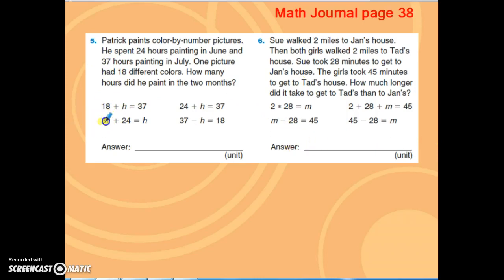The 37 plus 24 equals h. I'm going to go ahead and solve that problem, and then I'm going to put my answer on the line, and make sure that I label it. So how many hours? We'll find the answer to that, and then we'll label it with hours.